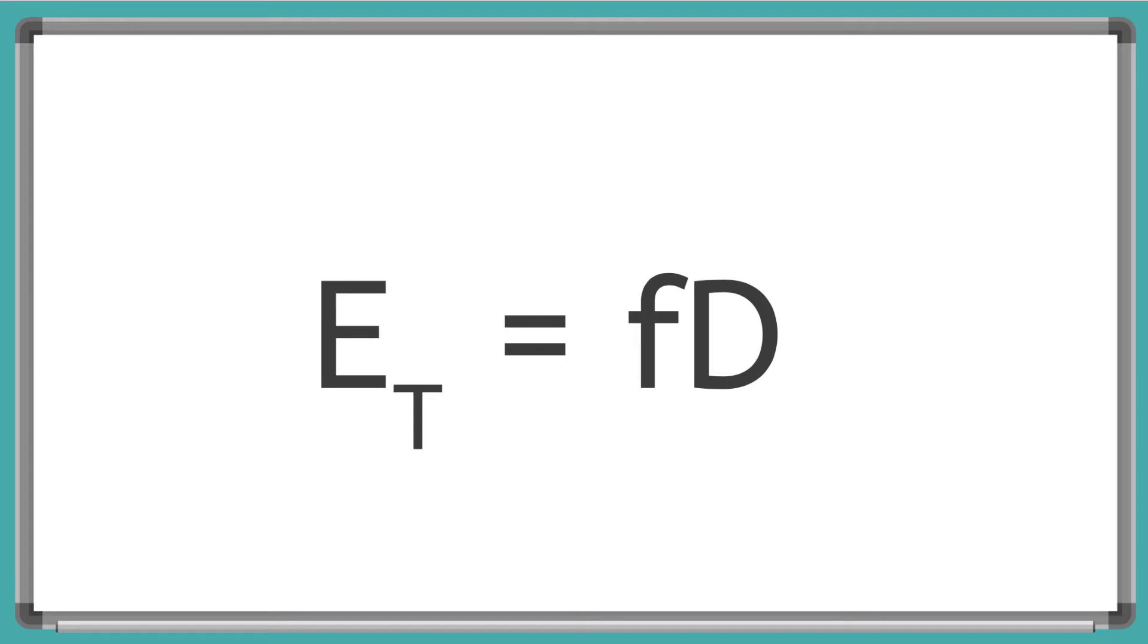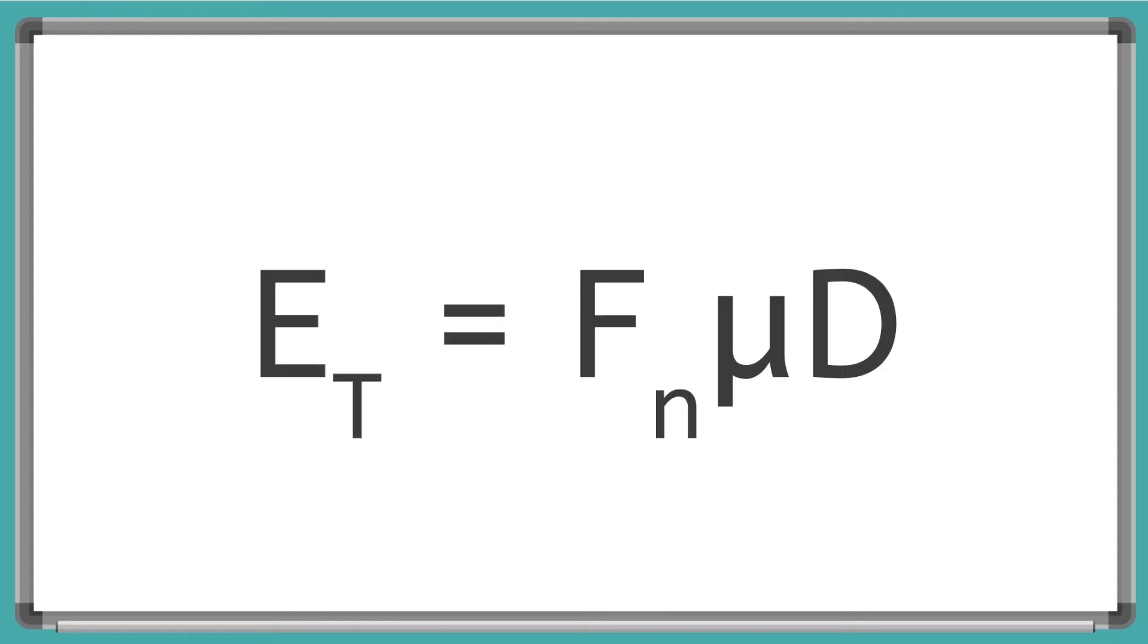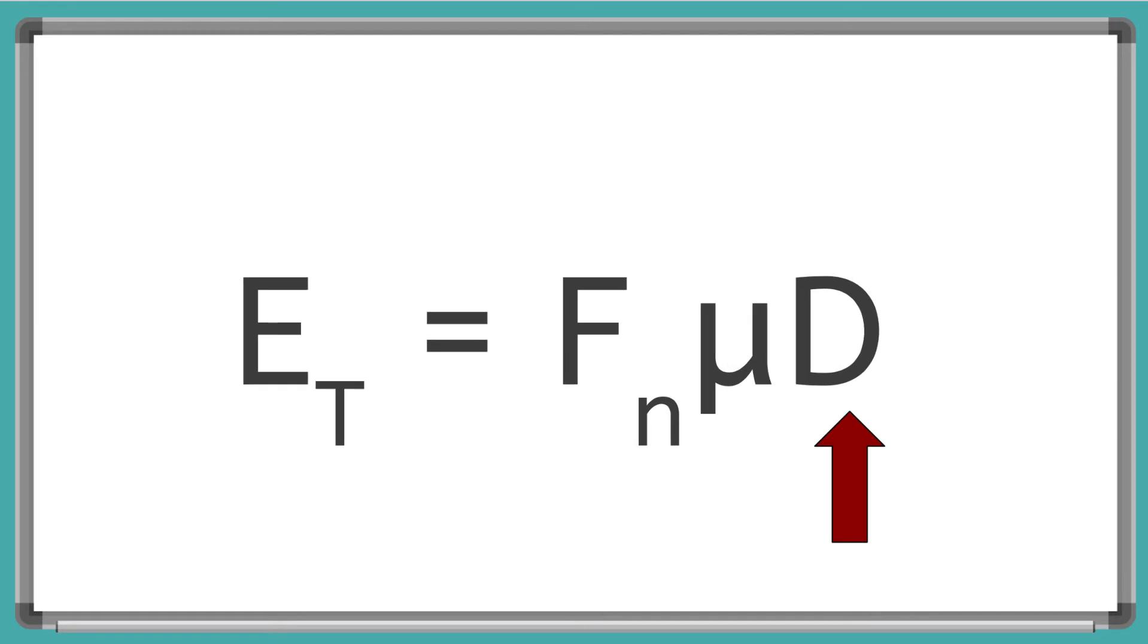Remember that little f is the friction force. And we already know what the friction force is. So we can rewrite this equation as ET equals the normal force times mu times D. And here, D is the distance the object moves while friction is acting on it or while the object moves over a surface that has friction.